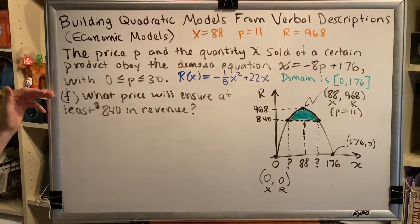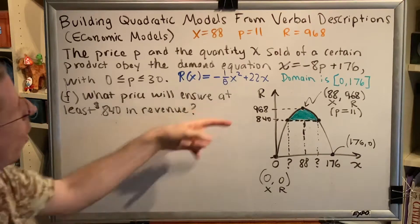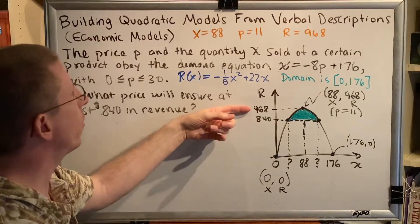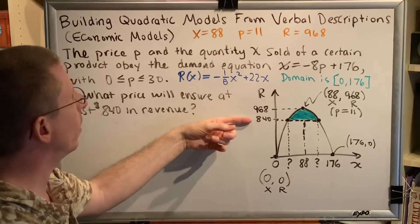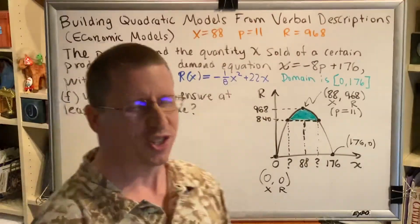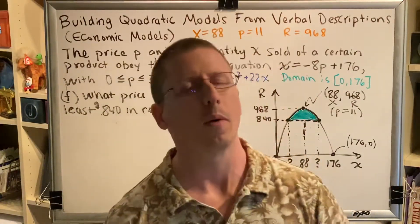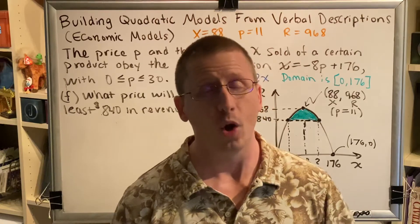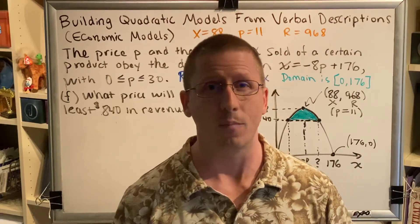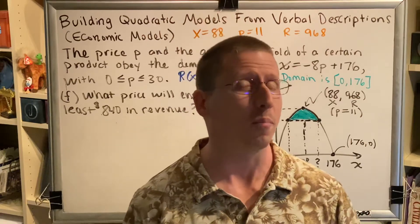So now that we've had a little bit of time to look at this diagram, I think this question will make a little more sense. What price will ensure at least $840 in revenue? We know that the maximum revenue we can make is $968. But what if we're willing to accept a little bit less revenue, $840? One advantage is that you can lower the price for your product, which means that perhaps you'll steal away business from a competitor.